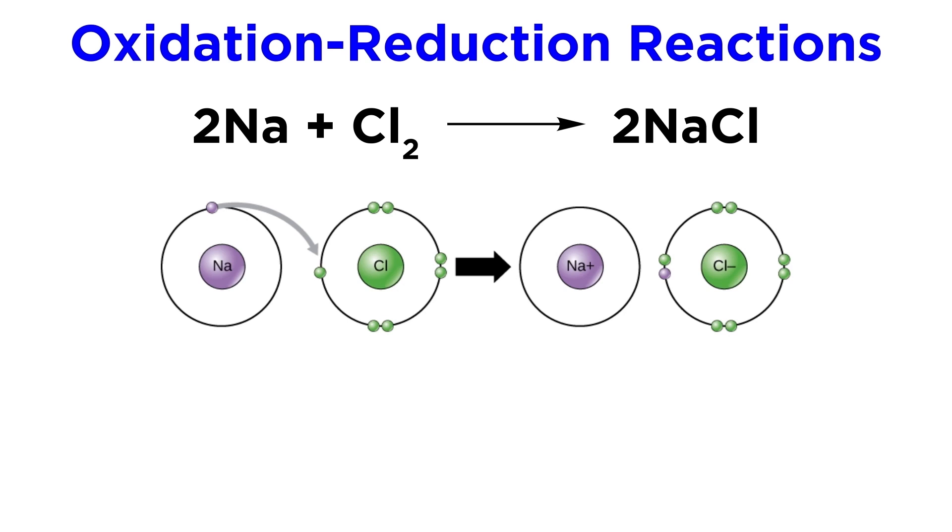In this process, sodium atoms will lose one electron to form sodium ions, and chlorine atoms each gain one electron to form chloride ions.